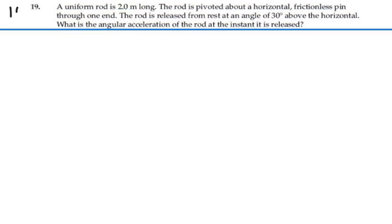Here's problem 10.19. A uniform rod is 2 meters long. The rod is pivoted by a horizontal frictionless pin through one end. The rod is released from rest at an angle of 30 degrees above the horizontal. What is the angular acceleration of the rod at the instant it is released?